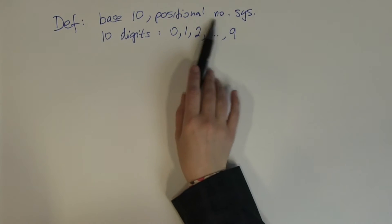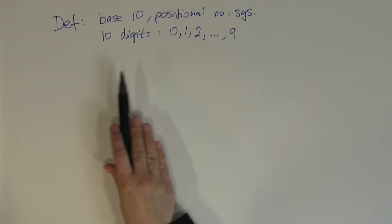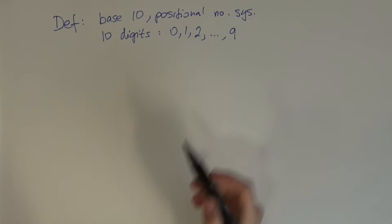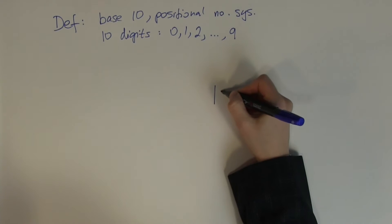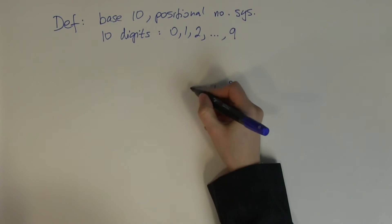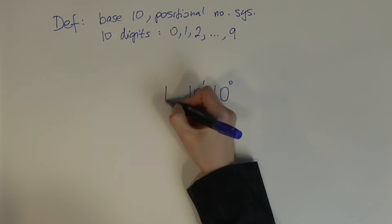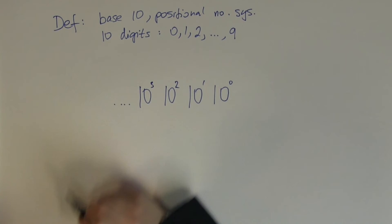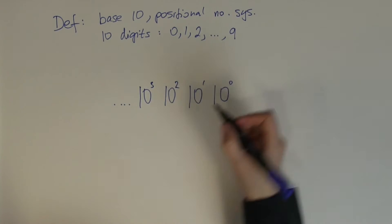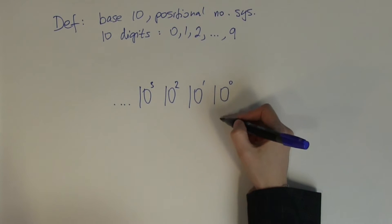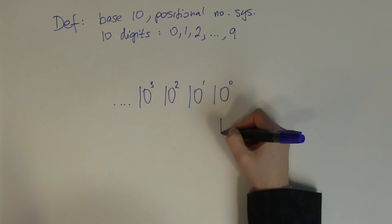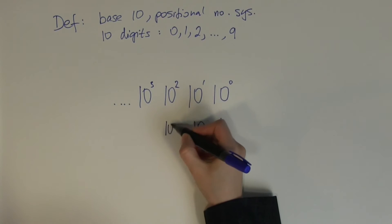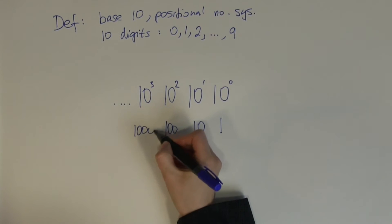It is a positional number system because if you place digits at different positions they represent different values. Formally, each of the place values is represented as 10 to the 0, 10 to the 1, 10 to the 2, 10 to the 3, and so on. As numbers: 10 to the 0 is 1, 10 to the 1 is 10, 10 to the 2 is 100, and 10 to the 3 is 1000.